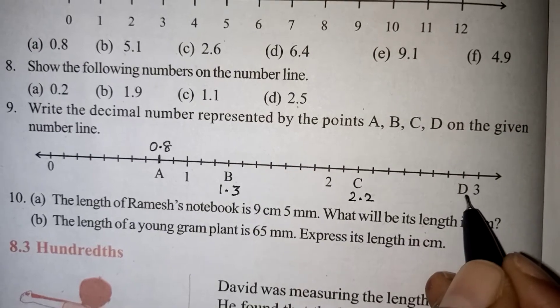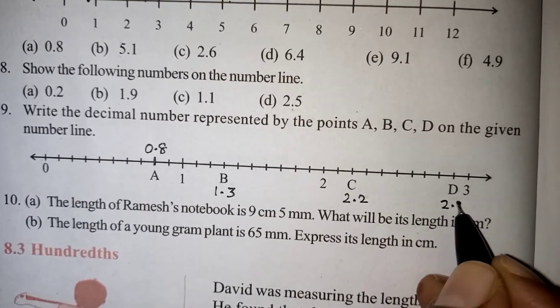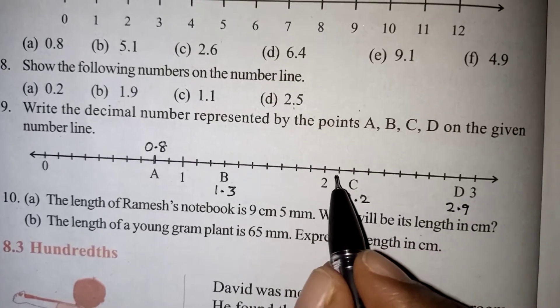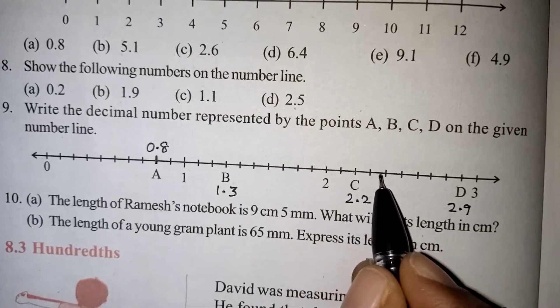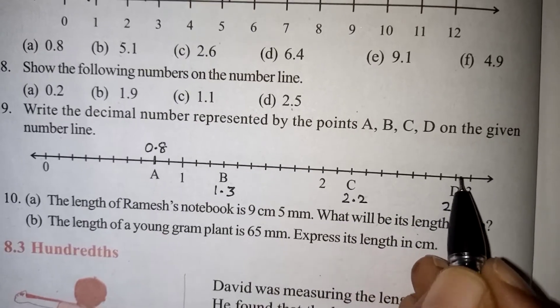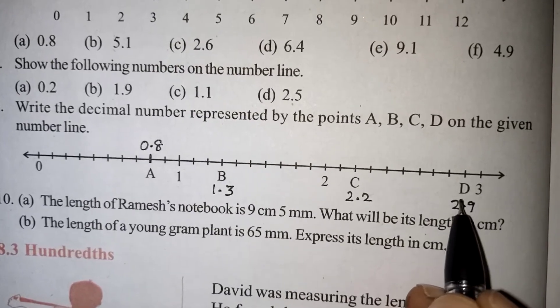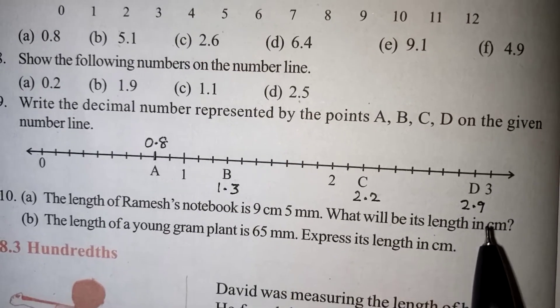Here D is coming before 3. That will be 2.9 or from 2 we have to count: 2.1, 2.2, 2.3, 2.4, 2.5, 2.6, 2.7, 2.8 and this is 2.9. From 2 we can calculate or from 3 we can minus 1. Both are the same, this is how we have to write.